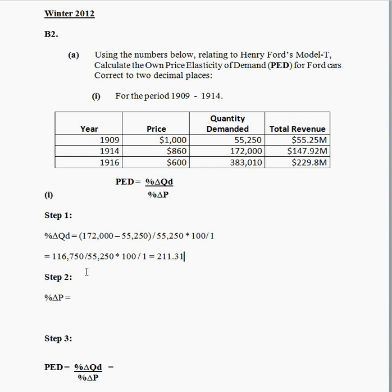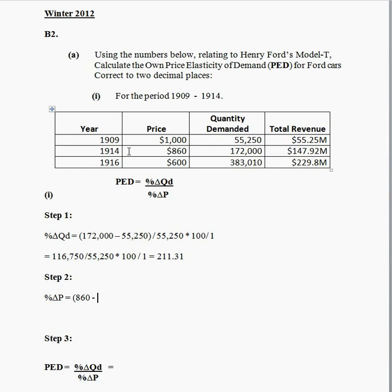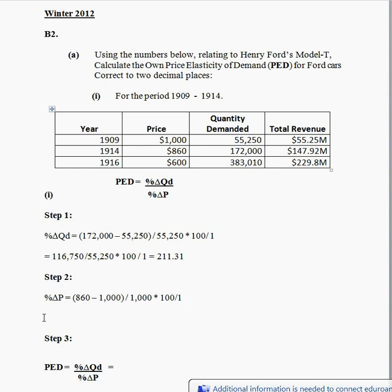That brings us to step 2: to work out the percentage change in price, and what's actually driving this big increase in quantity demand for the Model T Ford. The price in 1914 is $860 minus the price in 1909 which is $1,000, divided by the original price of $1,000, and multiply by 100 to get the percentage.